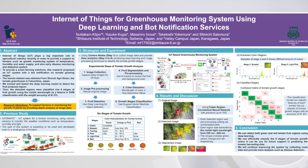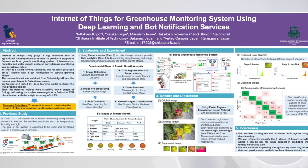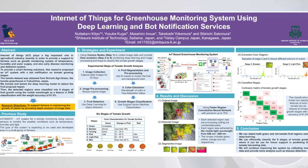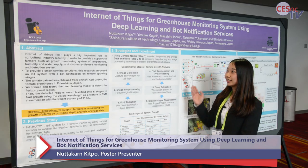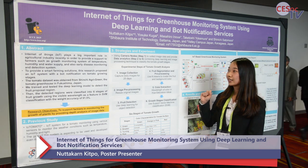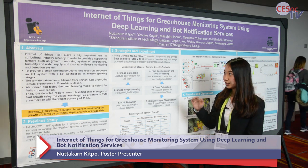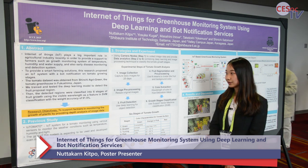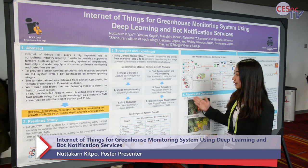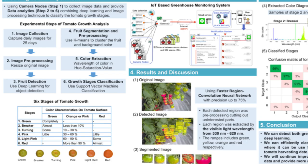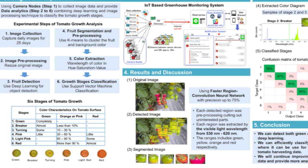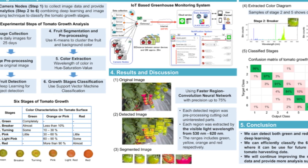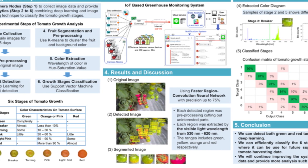We want to support the farmer in monitoring the growth of plants by providing deep image analysis. The main step of this experiment uses camera nodes and data analytics. We use daily images over 25 days and conduct analytics combining deep learning and image processing techniques to classify the tomato growth stage. With deep learning, we can detect the tomato region in the photo, distinguishing the tomato from soil or other parts of the farmhouse, so we can analyze only the tomato part.